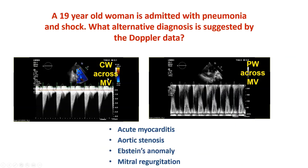Here's CW across the mitral valve in a 19-year-old woman who presented with pneumonia and shock. This is a transmitral flow at high velocity — 180 centimeters per second. The diagnosis is acute severe mitral regurgitation. This departure from the normal parabolic mitral valve envelope indicates that the pressure in the left atrium is rising dramatically.